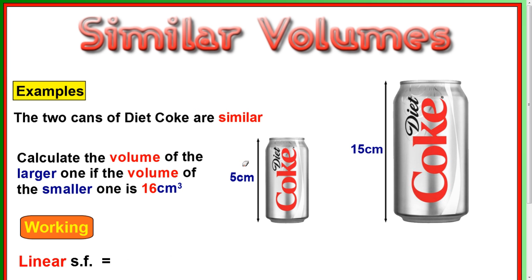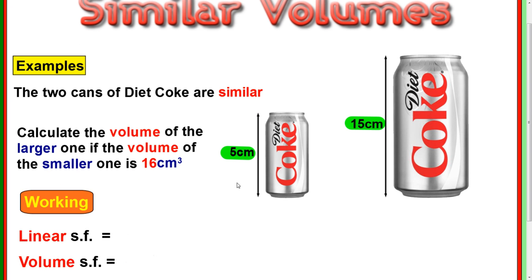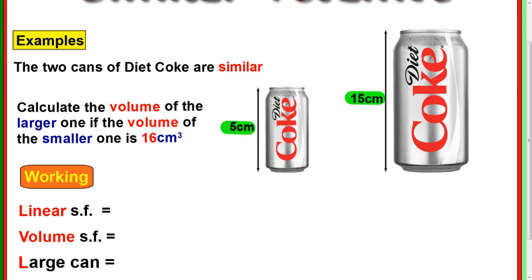Let's look at an example of that. So two cans of Diet Coke are similar. Calculate the volume of the larger one if the volume of the smaller one is 16cm cubed. So, we've been given the side lengths, and we can see these are the corresponding side lengths, so one is 15 and one is 5. So let's follow the same system we did for the area scale factor, so get the linear scale factor first. Second shape divided by first shape, so 15 over 5, which is 3.